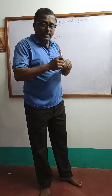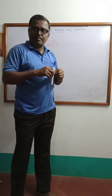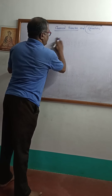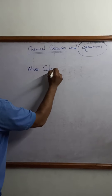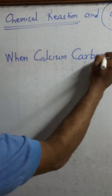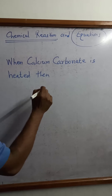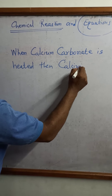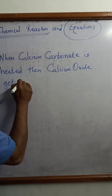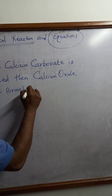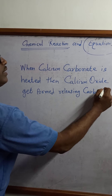We can call this a reaction. In words: calcium carbonate is heated, then calcium oxide is formed, evolving or releasing carbon dioxide gas. This is called a word reaction. It is not always possible to write the reaction in words, that is why we use chemical formulas. The chemical formula of calcium carbonate is CaCO₃.